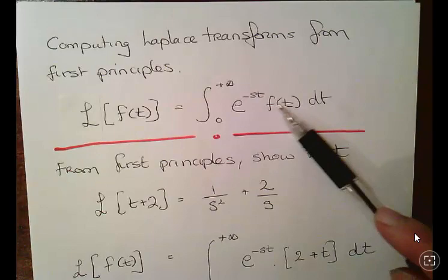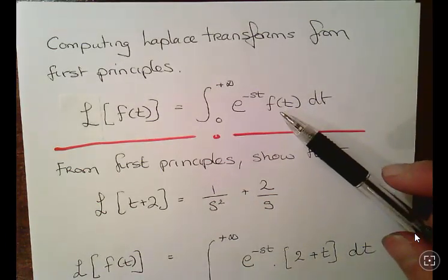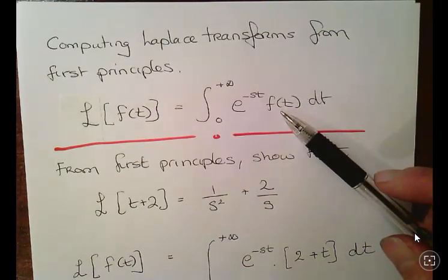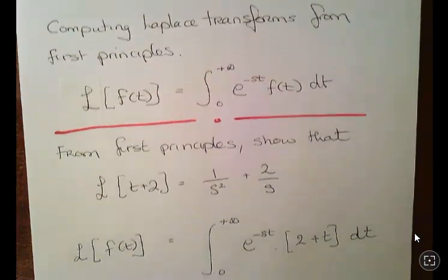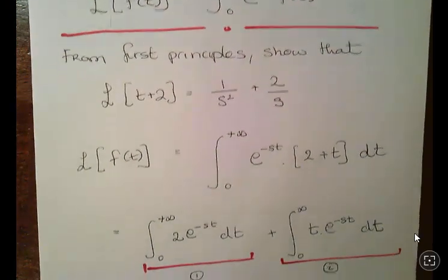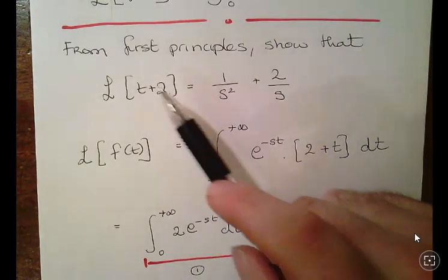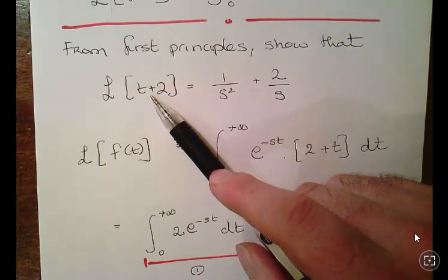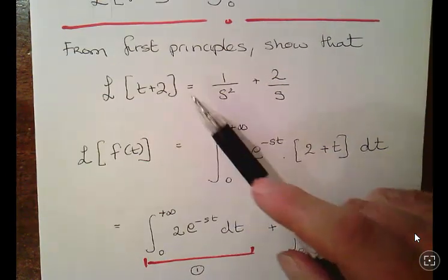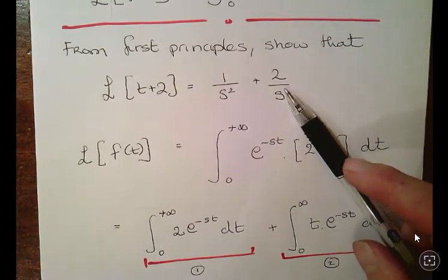So essentially whatever you have, multiply it by e to the minus st and then work it out. It's always helpful to remember if a function can be expressed in terms of exponential functions, which is not unusual. Now this particular exercise asks us to, from first principles, calculate the Laplace transform of t plus 2. And essentially I'm sort of actually showing the answer here. It actually is 1 over s squared plus 2 over s.